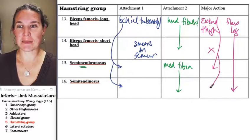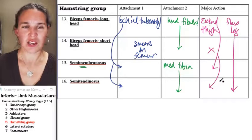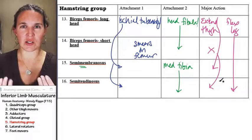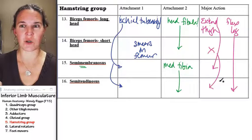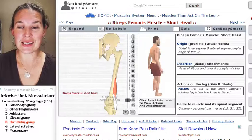But semimembranosus, semitendinosus, you know they're extending the thigh. You know that thing where you have to lie on your belly and you do leg curls, that's working your hamstrings group. Let's go take a look at these guys.